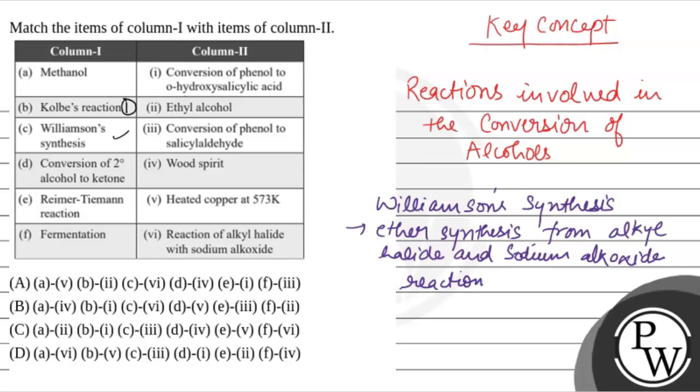So the reaction is R-X plus R'-O-Na+ gives ether that is R-O-R' plus X-. So the formation of ether with sodium alkoxide and alkyl halide. So Williamson's synthesis is 6.